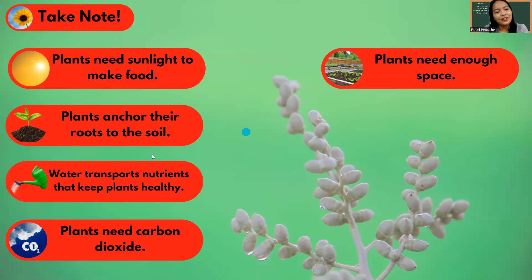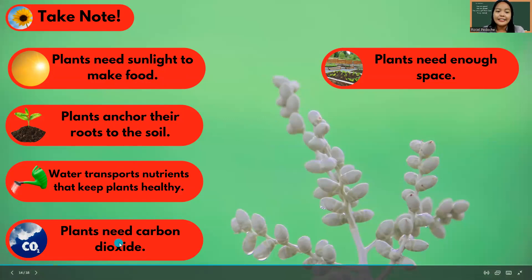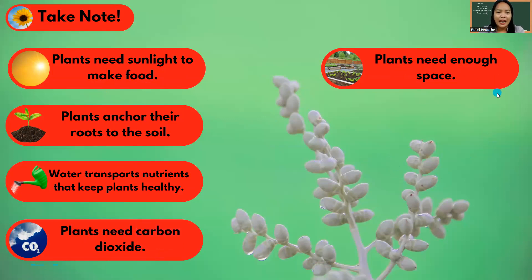Let's take note that plants need sunlight to make food. Plants anchor their roots to the soil. Water transports nutrients that keep plants healthy. Plants need carbon dioxide, and plants need enough space.